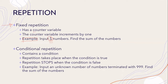So to create fixed repetition, you need a counter variable, and the counter variable will increment — usually by one. It doesn't have to increment by one, but usually it changes and it increases by one. So for fixed repetition, we're going to create a counter. That counter is going to increase by one each time, and when it reaches five, this will denote that the repetition needs to stop.